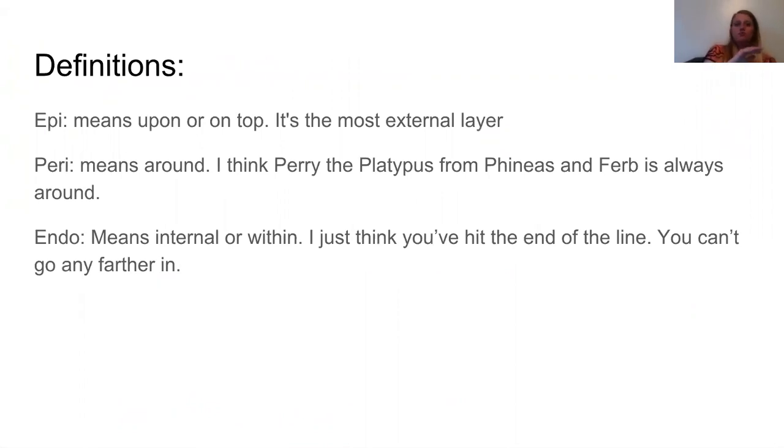Peri means around. It's in your middle, your middle layer. To remember that it means around, I think Perry the Platypus from Phineas and Ferb is always around. That will help you with other classes if you want to memorize what peri means. And endo is your most internal layer. I just think you've hit the end of the line. You can't go any further, you're in.